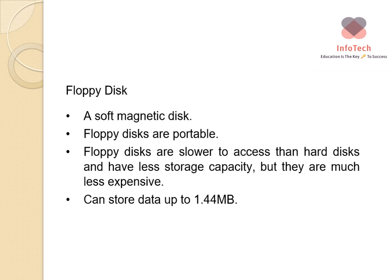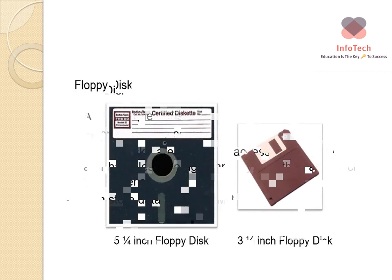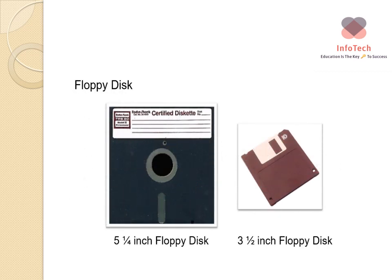A floppy disk is a soft magnetic disk. Floppy disks are portable but slower to access than hard disks and have less storage capacity, though they are much less expensive. You can store data up to 1.44 megabytes, which is quite small. Here is a visual representation of a floppy disk — you have two different sizes: the 5¼-inch floppy disk and the 3½-inch floppy disk.